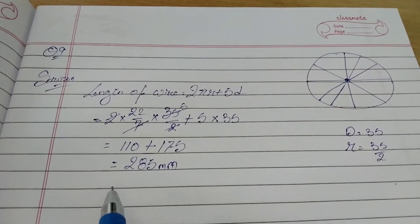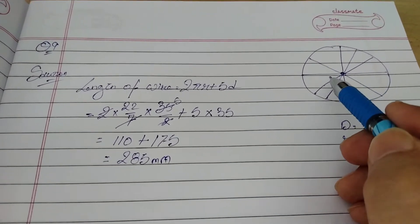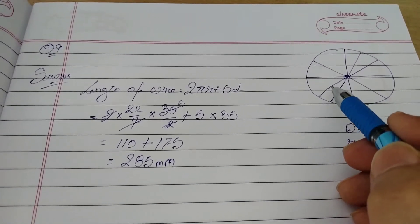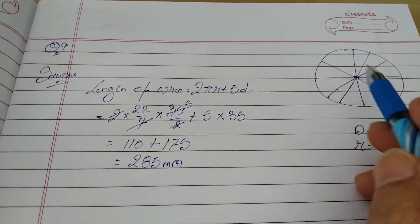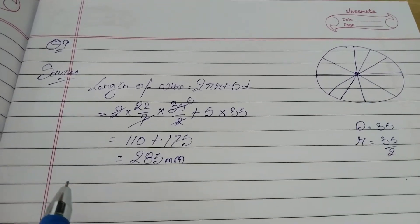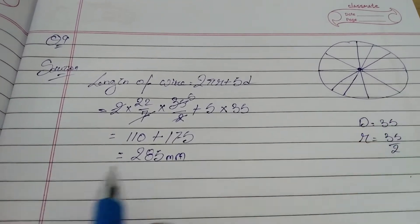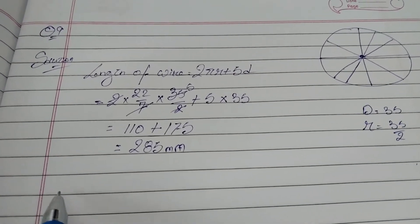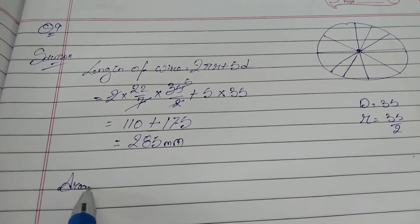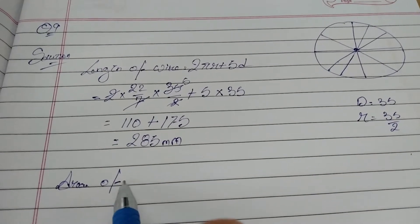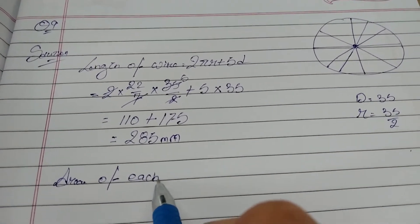Okay, next we have to find the area of each sector. So there are 10 sectors in a circle. Circle is always 360 degrees, correct? So area of each sector...